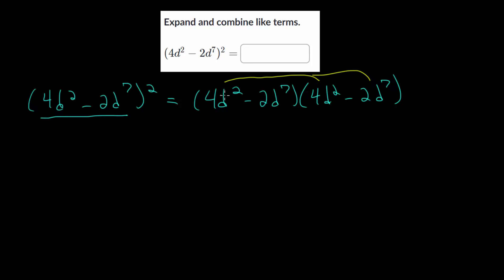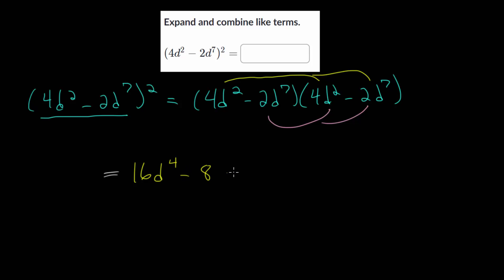The 4d squared will multiply into both of those terms, and the minus 2d to the seventh will multiply into both of those terms. So we get 4d squared times 4d squared, which is 4 times 4 equals 16, and d squared times d squared is d to the fourth. Then 4d squared times minus 2d to the seventh: 4 and minus 2 gives minus 8.